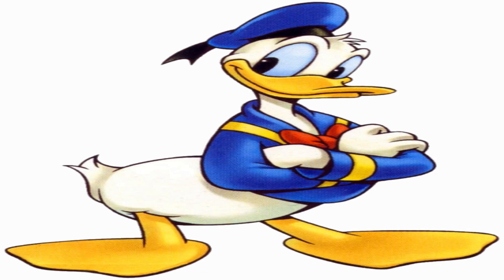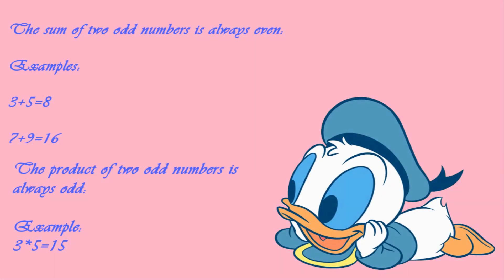Now let's see some of the definitions and examples of odd and even numbers. Sum of two odd numbers is always even. Examples: 3 plus 5 is equal to 8 which is an even number. 7 plus 9 which is equal to 16, that is also an even number.